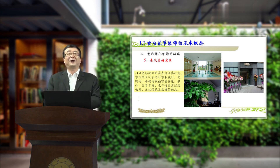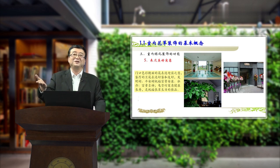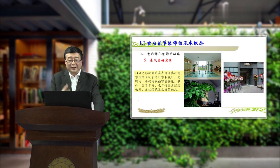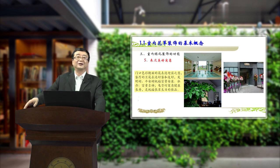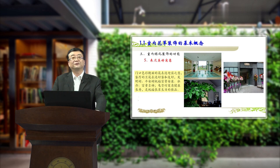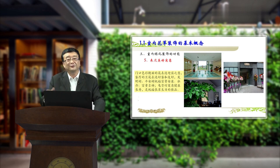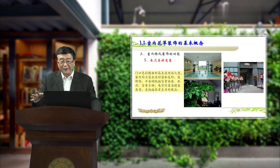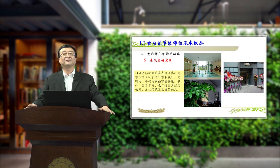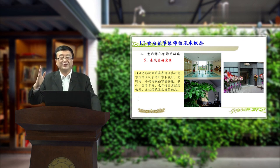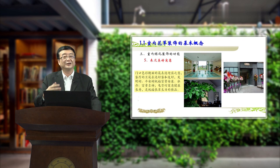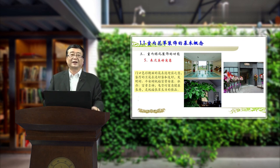室内绿化的第五种功能就是表达美好的意义。比如说我们家的门口色彩艳丽的花，表达宾至如归之意；客厅的兰花表达好客友好；像发财树、平安树祝福富贵安康；牡丹寓意富贵吉祥；北极主寓意健康长寿，是祝福长辈生日的佳品。所以室内绿化能够表达美好的意义。